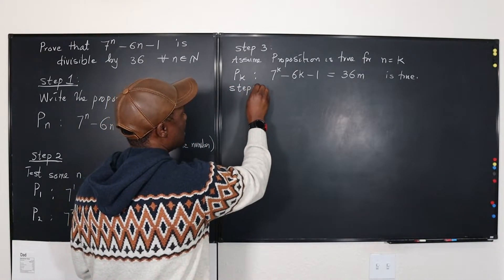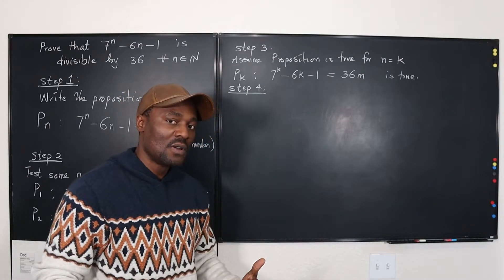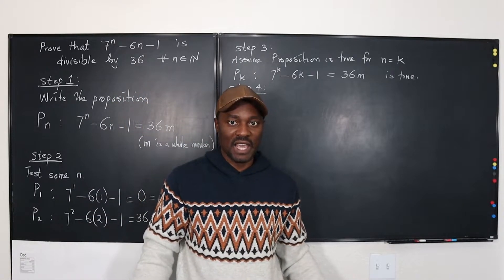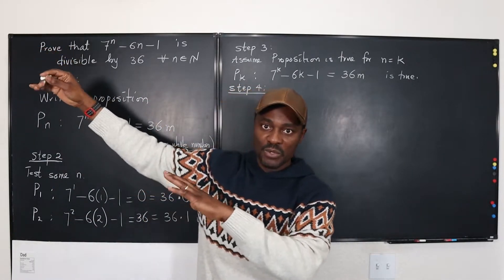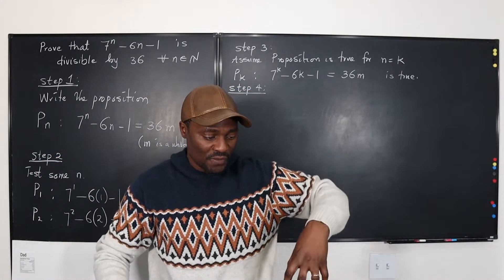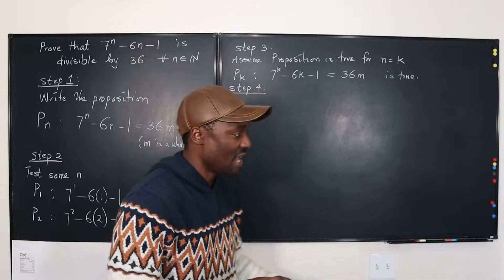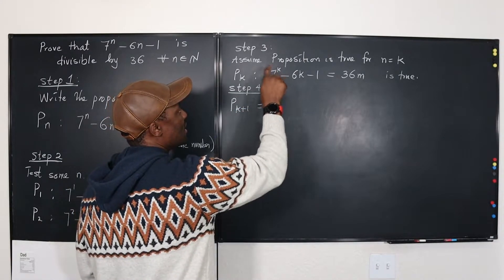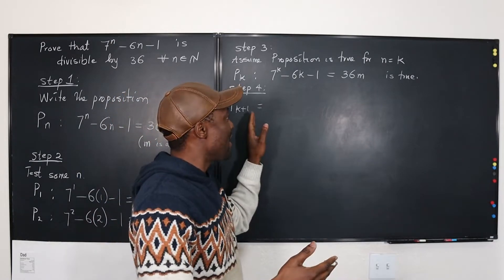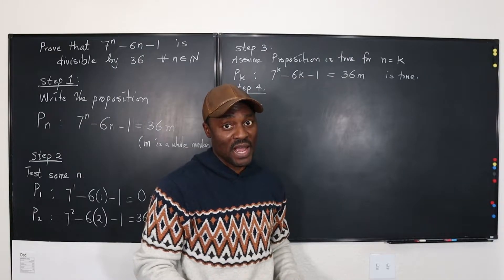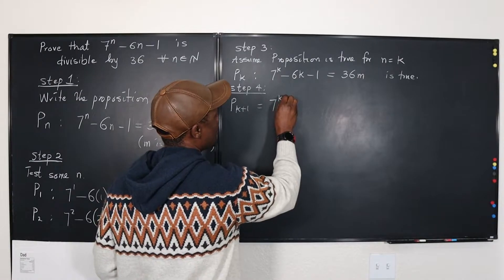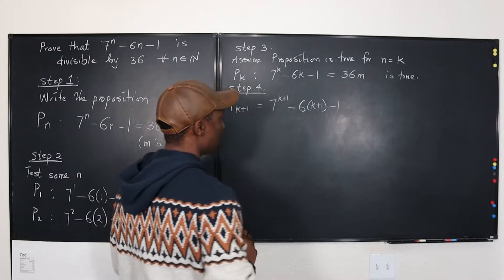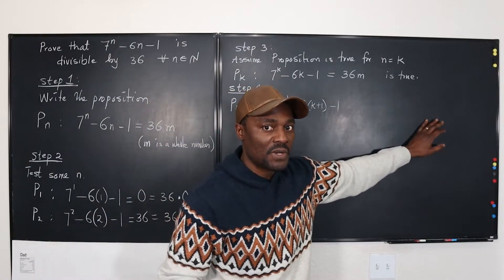Step four is the proof step: we have to write a proposition for P(K+1). We're saying it is true for any K in the natural numbers — 1, 2, 3, whatever — but we want to show that if it's true for K, then it's true for the number immediately after it, K plus 1. So we write P(K+1), which means we change K to K+1: 7 raised to the power K+1, minus 6 times (K+1), minus 1. We need to prove that whatever we get here is divisible by 36.